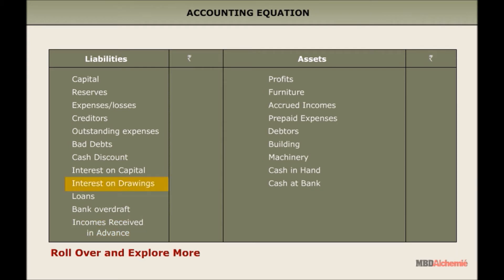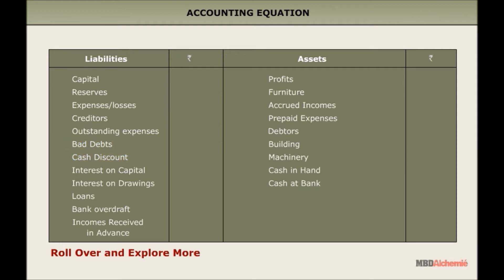Interest on drawings is shown on the liabilities side of the balance sheet. Interest on capital is shown on the liabilities side of the balance sheet. Bad debts are shown on the liabilities side of the balance sheet. Cash discount is shown on the liabilities side of the balance sheet.